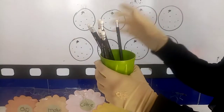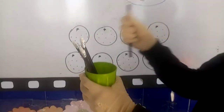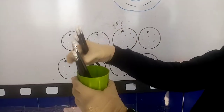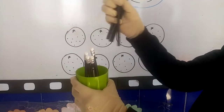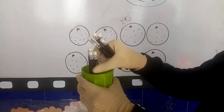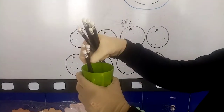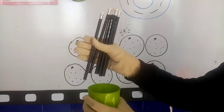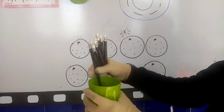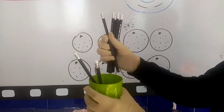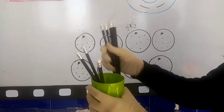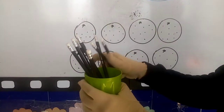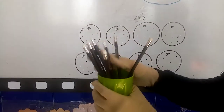Okay, read it again. One, two, three, four, five, six, seven, eight. How many pencils are here? Eight. Okay, read it again. One, two, three, four, five, six, seven, eight.